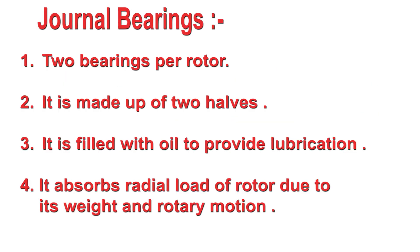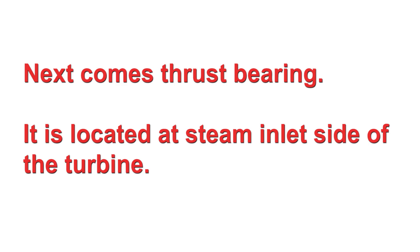Journal bearing characteristics: one, two bearings per rotor; two, it is made up of two halves; three, it is filled with oil to provide lubrication; four, it absorbs the radial load of the rotor due to its weight and rotary motion.